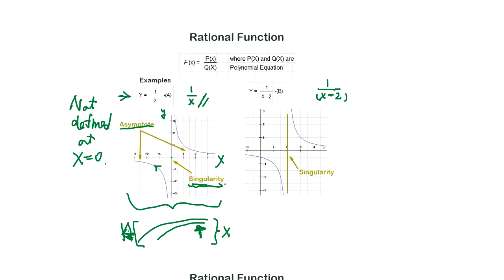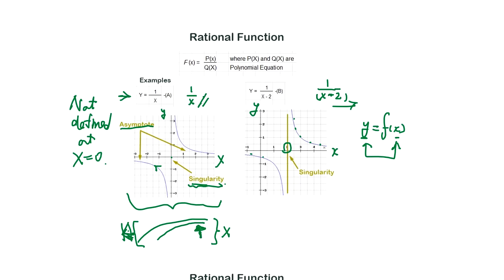When you shift by 2, the function 1 over (x minus 2) looks like the original but shifted right. Recall the definition of a function: a function is the relationship of two variables. In this case, y equals f(x), where x and y are variables — unknown values. Whatever pair of values satisfies the function equation will be on this line. The singularity shifts here because of the shifted rational function.